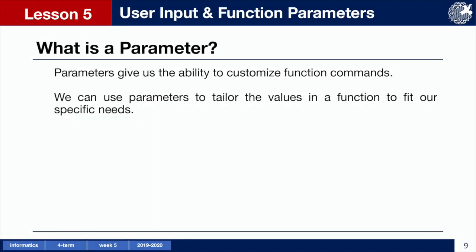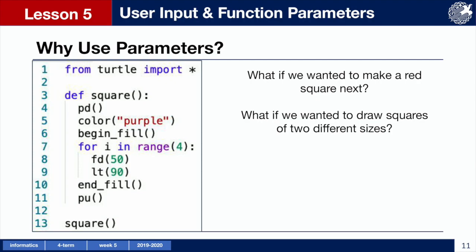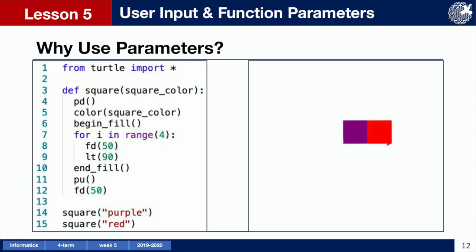Now let's take a look at parameters. Parameters allow us to customize the commands used in our functions. They are used because they give us the ability to tailor our function values to suit our specific needs. For example, this function called square function draws a purple square with a length of 50 and moves forward the length of the square. But what if we wanted a red square or two squares of different sizes? Without parameters, we would need to make entirely new functions. Parameters make it easy to change certain parts of a function so we can reuse the same function to accomplish multiple tasks.